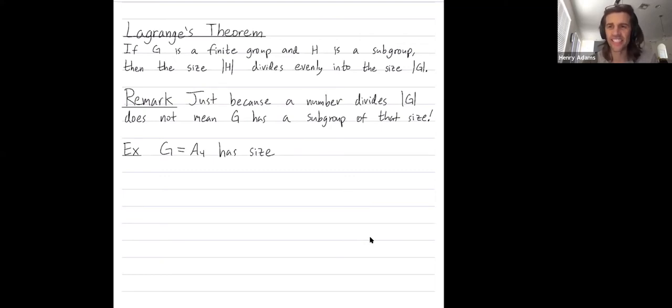In particular cases, related to prime numbers and things, sometimes you can guarantee that you have subgroups of that size, but not in general. So the remark I'm trying to make is that just because a number divides the size of a group does not mean that that group has a subgroup of that given size.